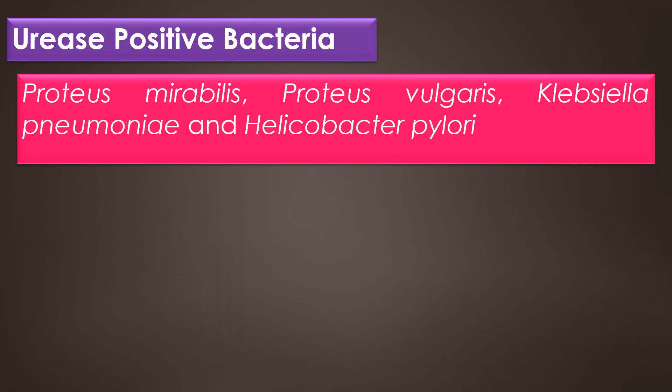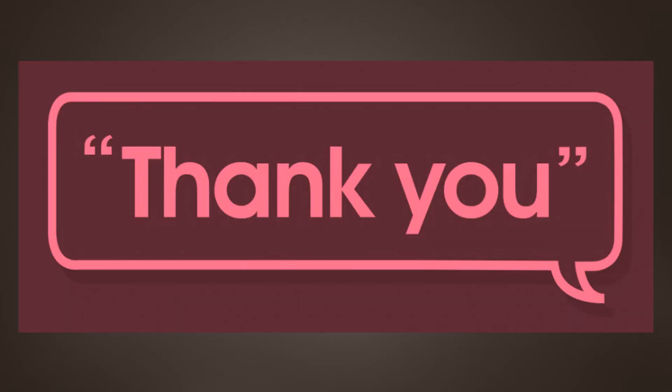Some examples of urease positive bacteria are Proteus mirabilis, Proteus vulgaris, Klebsiella pneumoniae, and Helicobacter pylori. Proteus mirabilis and Proteus vulgaris are considered fast urease producers, as the Proteus species are able to produce the urease enzyme within 1 to 2 hours. Klebsiella pneumoniae is called a late urease producer because it takes 3 days to produce the urease enzyme. Dear viewers, thank you for your support. Thank you.